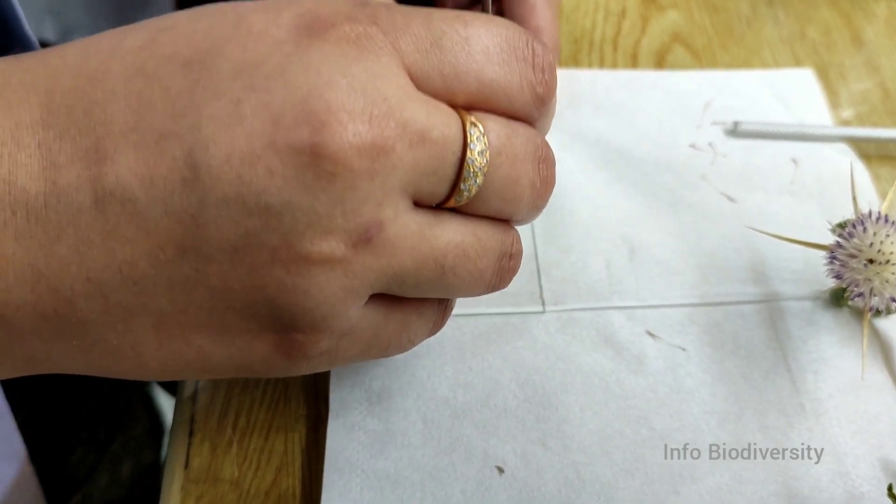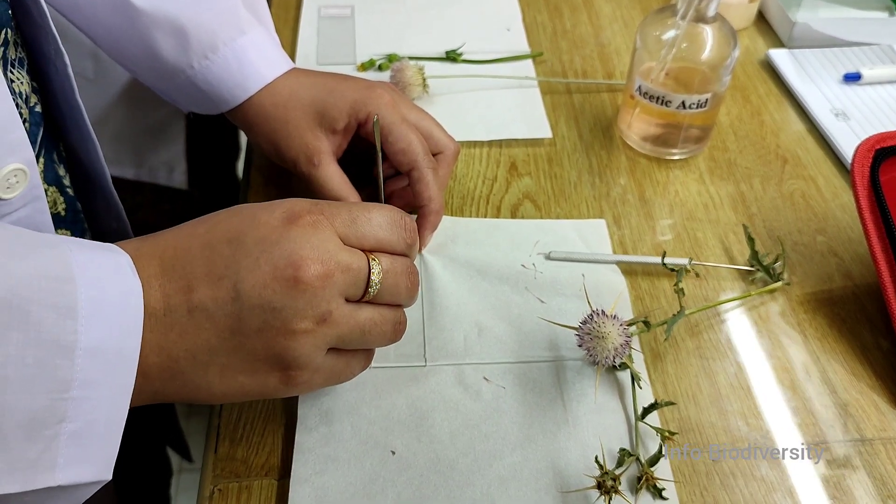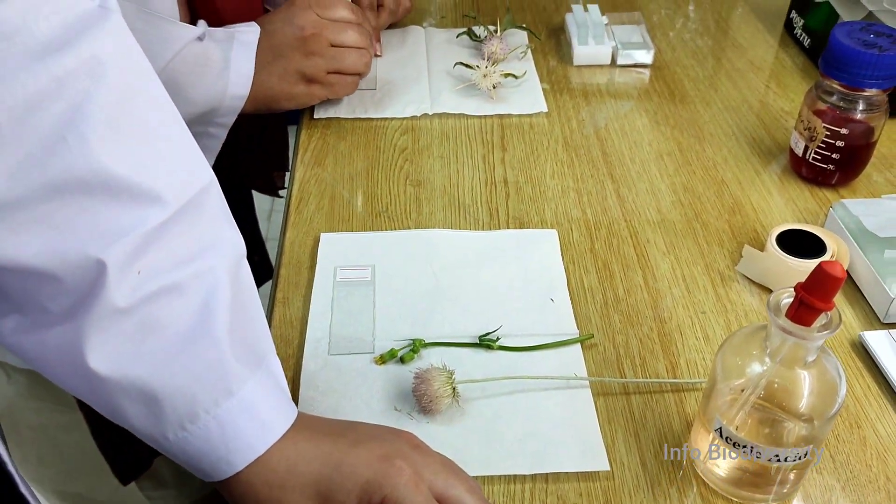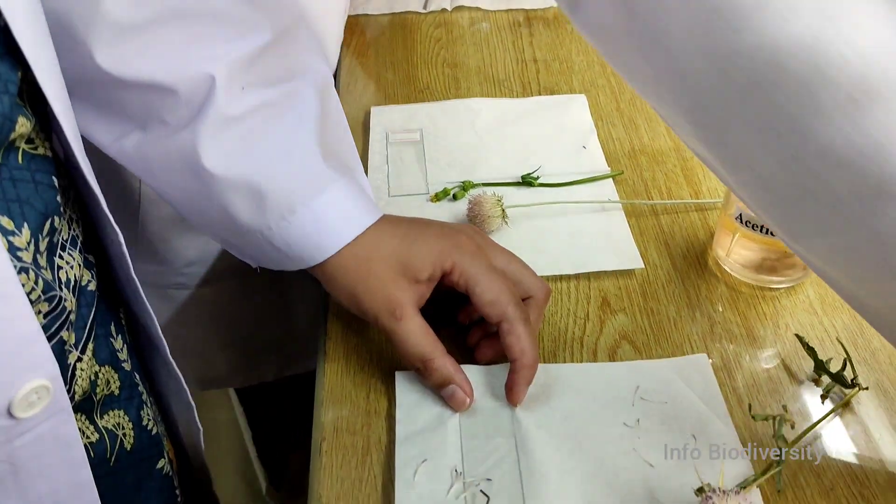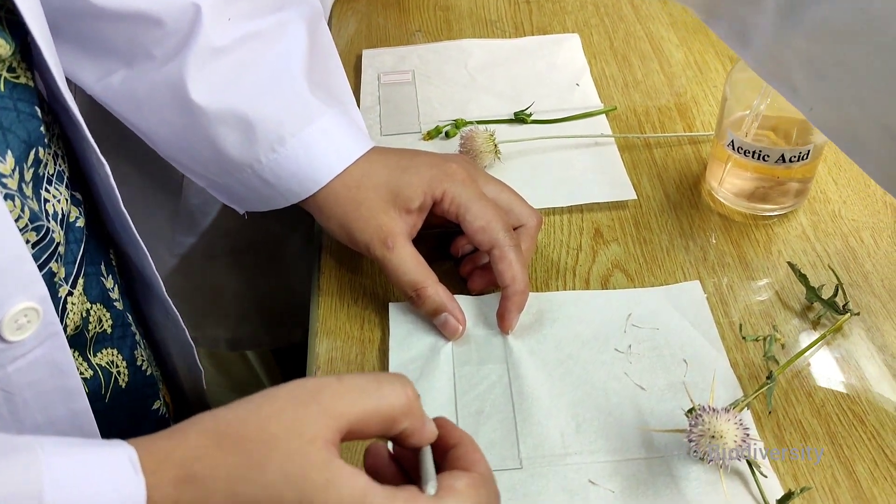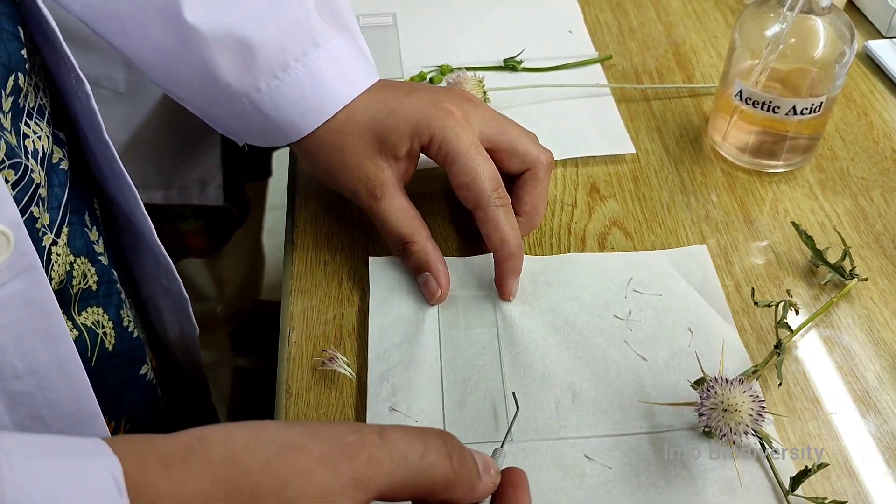After putting the drop of acetic acid, you can crush the anther by using a rod. After crushing the anther, you can separate the debris or the waste material of the flowers. You can easily remove these by using a needle.